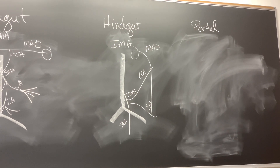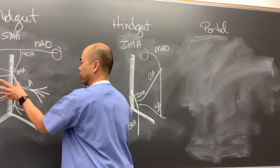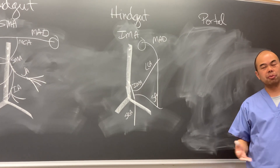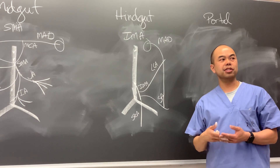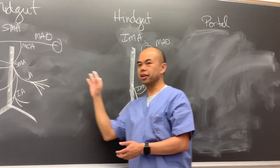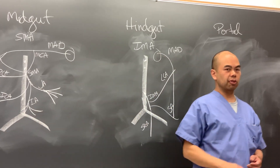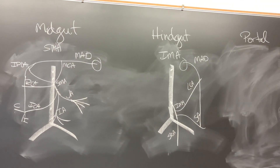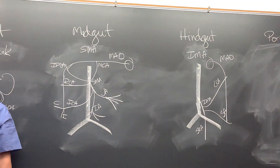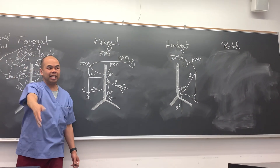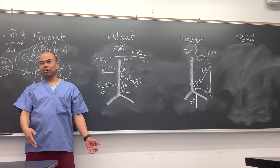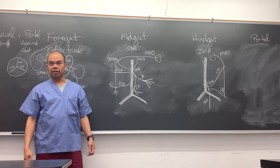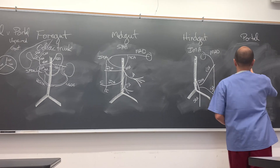All these arteries supply the gut, which means deoxygenated blood from the gut has to drain into something - and it drains into the portal venous system. In the cable system, blood drains into the same-named veins. But in the gut, since these arteries are unpaired, we have the portal system.